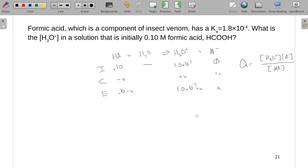We're going to plug some things in. At equilibrium, this is 1.8 times 10 to the negative fourth equals 1.0 times 10 to the negative seventh plus x, and x all over 0.10 minus x.